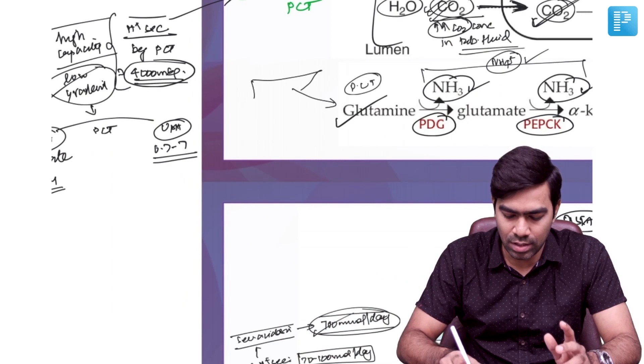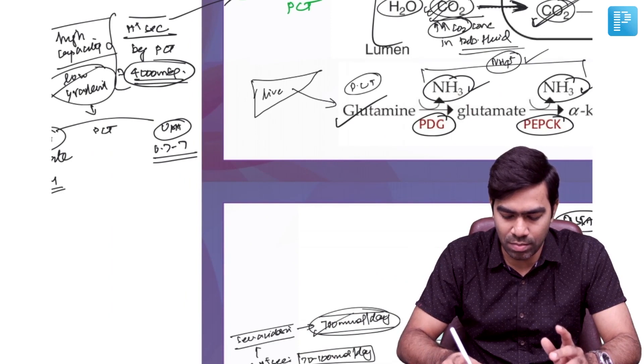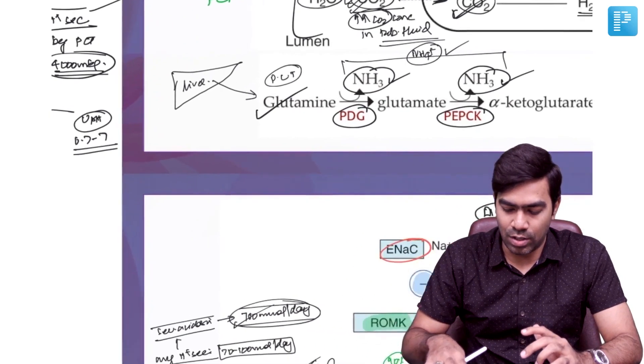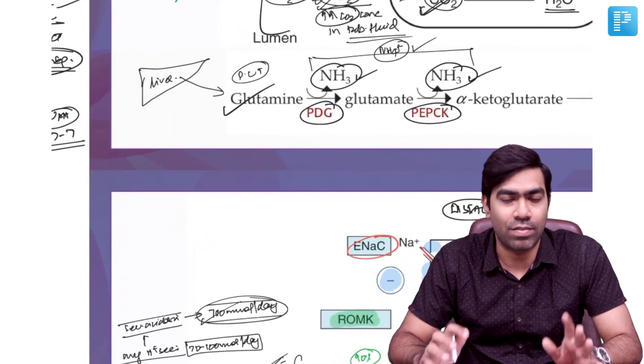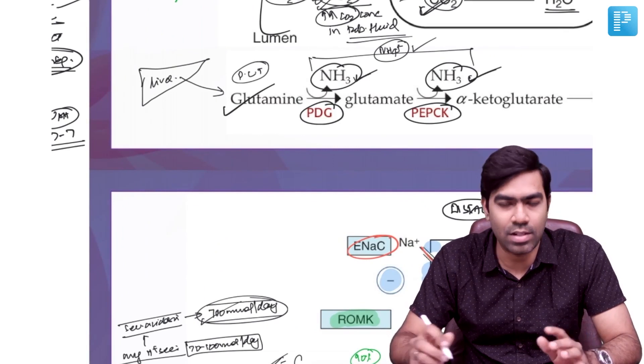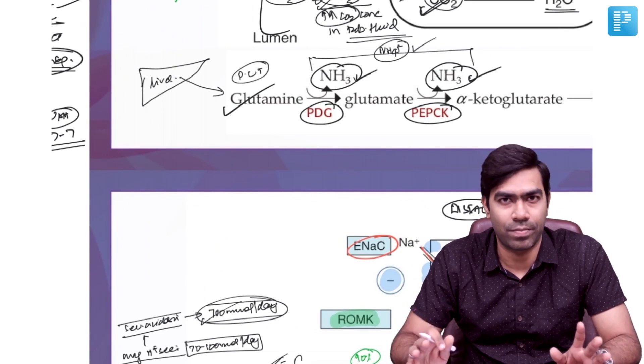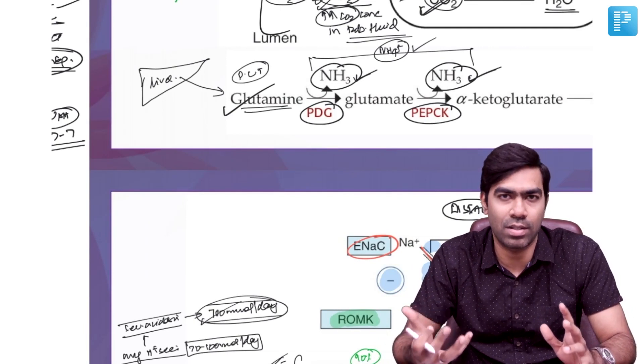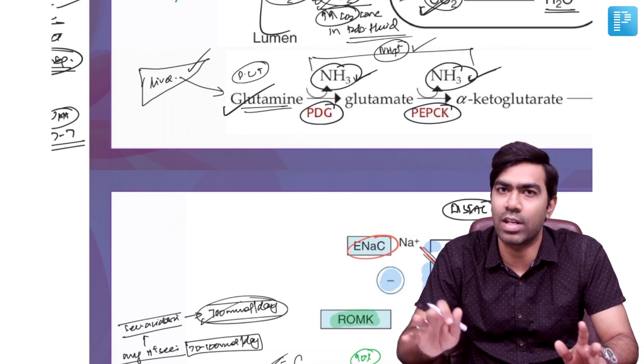Ammonium is produced in the kidneys through glutamine, which comes from the liver. The kidneys have an essentially infinite capacity to produce ammonia when functioning normally, because the liver can produce any amount of glutamine. Therefore, ammonium production and ammoniagenesis are not a limiting factor in patients with metabolic acidosis.